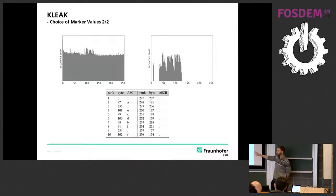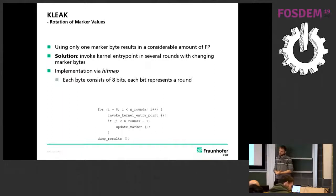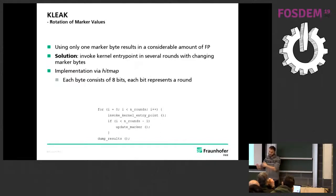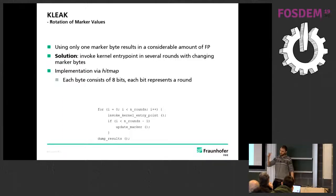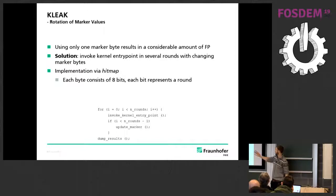We chose marker bytes that are infrequent — values like 154, 218, and similar, some of which are prime numbers. Using only one marker byte has a considerable amount of false positives, so the solution was to invoke the kernel entry points over and over again but changing the marker bytes and using a hit map. With this hit map, each offset has a byte containing 8 bits; if we choose 8 rounds we switch a bit on each round when we encounter a matching byte, and at the end we evaluate results.